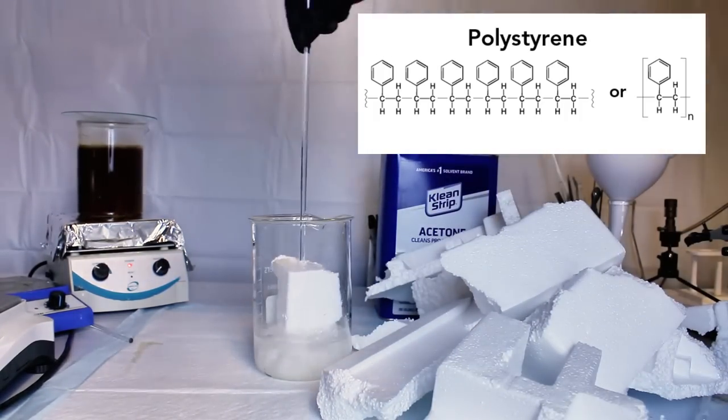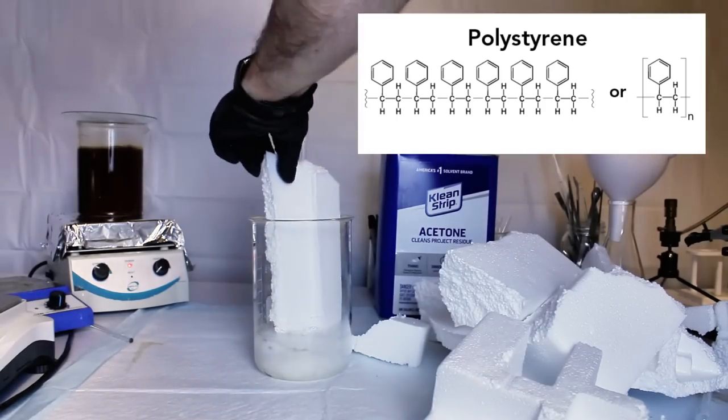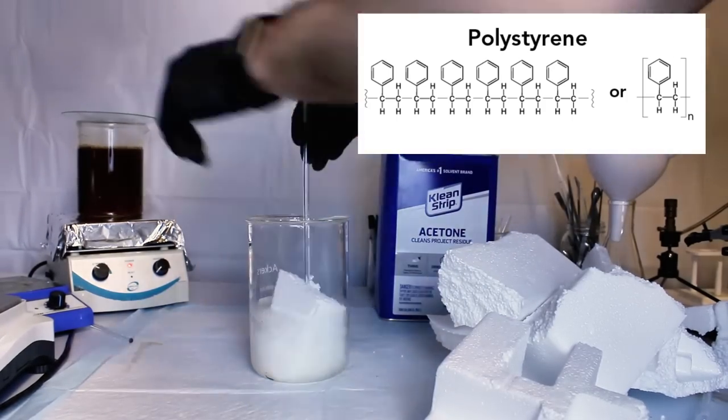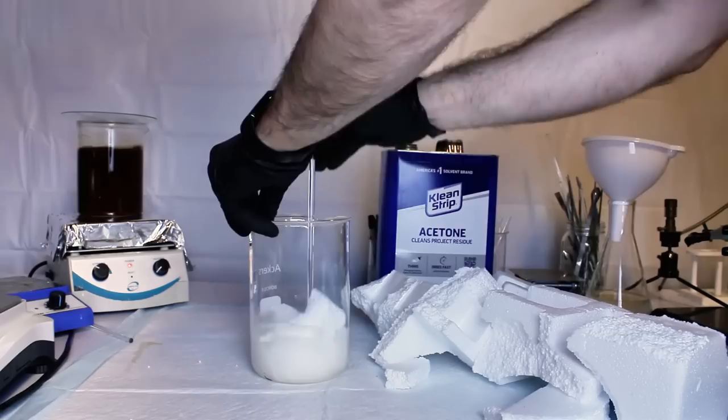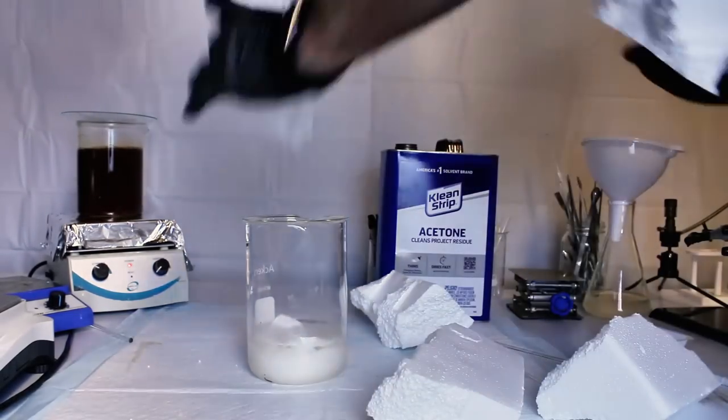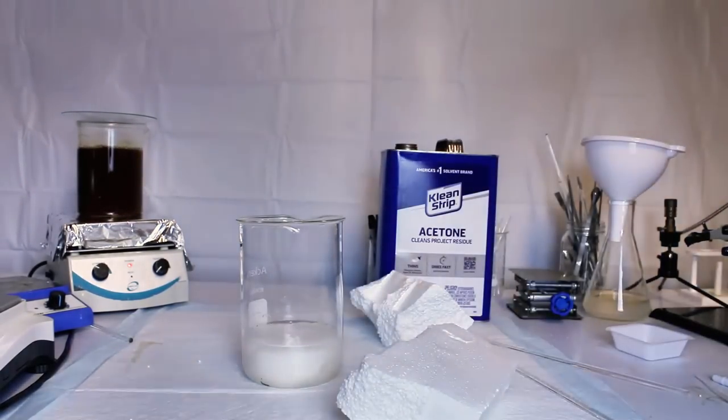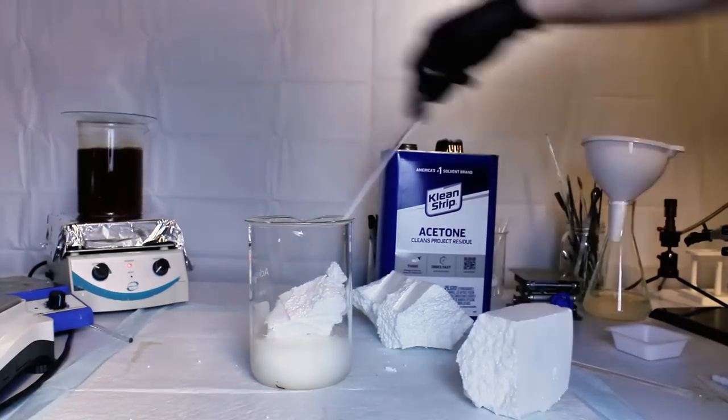Polystyrene is a plastic polymer that's soluble in acetone, and since Styrofoam is mostly air, you can dissolve a pretty massive amount of Styrofoam in a very small amount of acetone. This process releases all of the air that's trapped in the Styrofoam, and when you allow the acetone to evaporate, you're left with a solid piece of plastic.